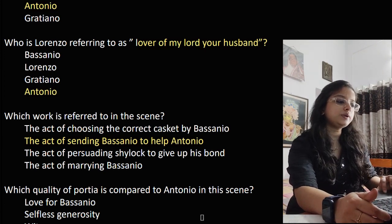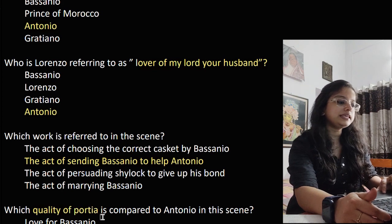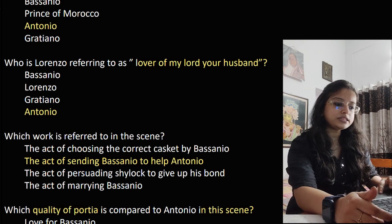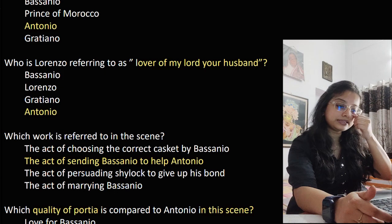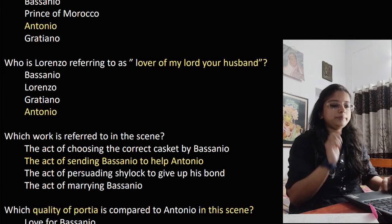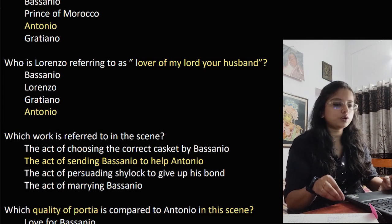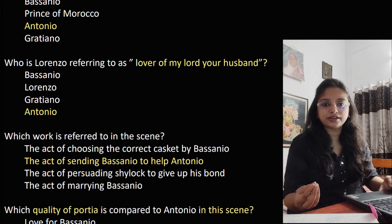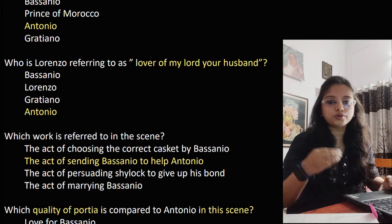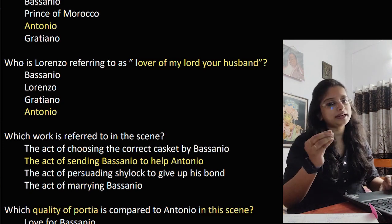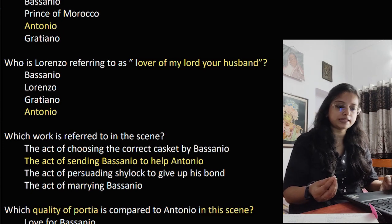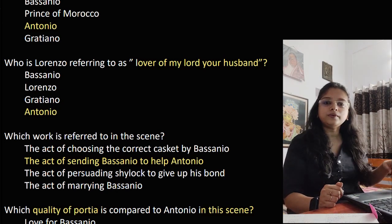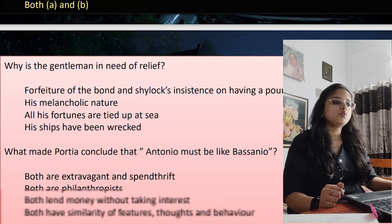Which quality of Portia is compared to Antonio in this scene? The options are love for Bassanio, selfless generosity, wit, or both A and B. The answer is both A and B, because Portia mentions that if she is so close to Bassanio, and Antonio is close to Bassanio, then she is quite like Antonio — showing both her love for Bassanio and her selfless generosity in going to help Antonio in Venice.